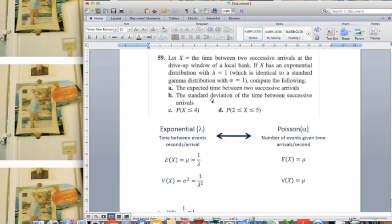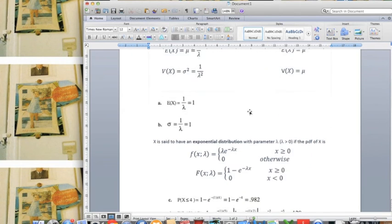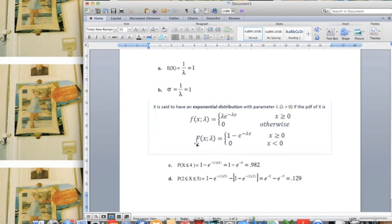And part C asks about the probability of x less than 4, and part D asking about the x between 2 and 5. So we can do these two together. And we know that the CDF distribution has this formula, 1 minus e to the negative lambda x.